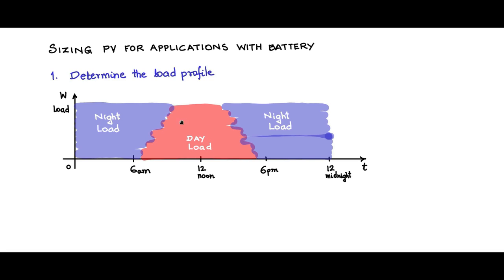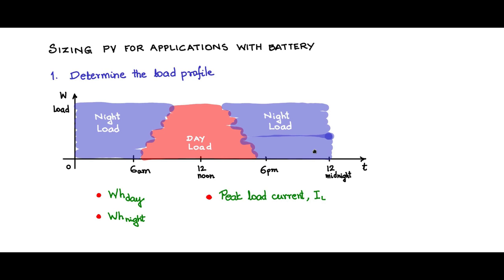After completing the load profile, the key parameters we need are: watt-hours of day load (all loads occurring during the day period), watt-hours of night load (all loads during the night periods combined), the peak load current Ilm — useful for battery design — and the average load current Il for the entire day, also helpful in designing the battery.